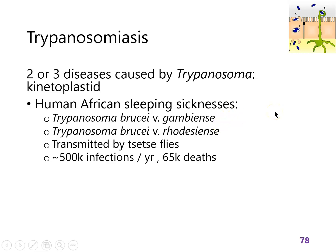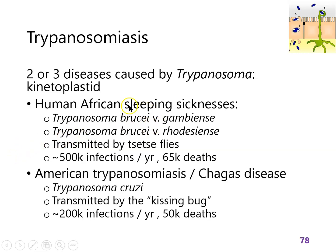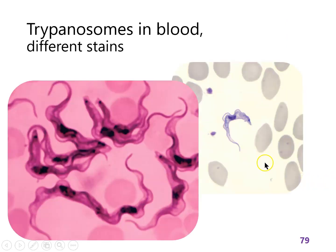African sleeping sickness is common and typically happens in Africa where tsetse flies live. In the Americas, we have Chagas disease, because in the Americas a different species from this genus can be transmitted by the kissing bug — which is nightmare fuel. This is what trypanosomes look like: weird shaped things with a long flagellum. These are blood smears showing an erythrocyte alongside a lot of trypanosomes in somebody's bloodstream. If you find any trypanosomes in someone's bloodstream, that's very bad news for that person.